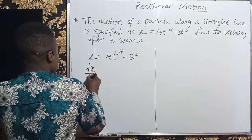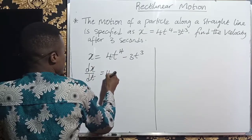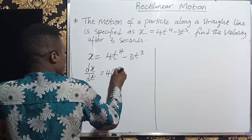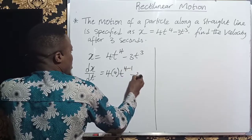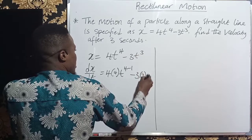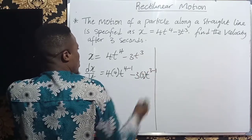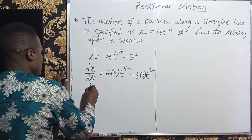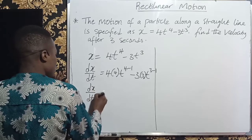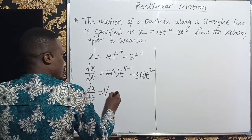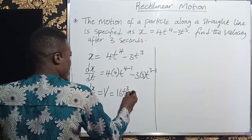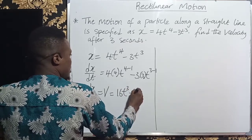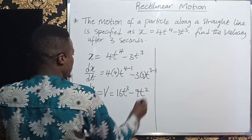So dx over dt will give me, 4 is here, 4 will come to the back, t, 4 minus 1, minus 3 is here, 3 will come to the back, t, 3 minus 1. So my dx over dt, which is the same thing as the velocity I'm looking for, will be 4 times 4 is 16, t to the power of 3, minus 3 times 3 is 9, t to the power of 2.